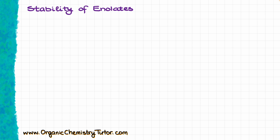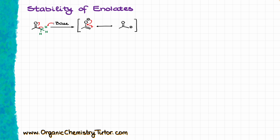Now, let's start with something as simple as an acetone molecule. I'm going to treat this acetone with a base — the nature of the base is not relevant for us right now. What is relevant is that in the alpha position we have hydrogens. The base can come in and pull one of those hydrogens off, giving us the corresponding conjugate base of our carbonyl compound. This conjugate base is stabilized by resonance, and we call it an enolate anion, or just enolate for short.